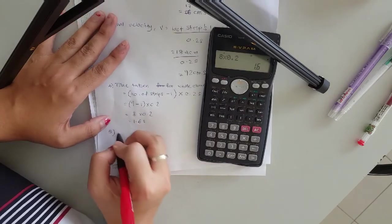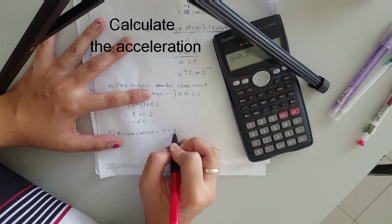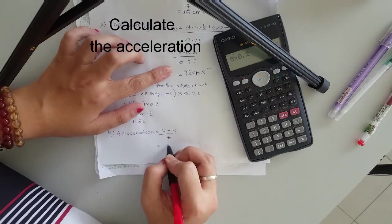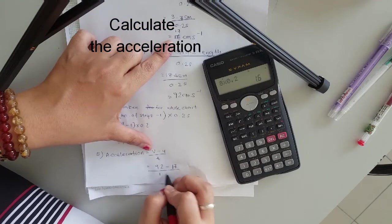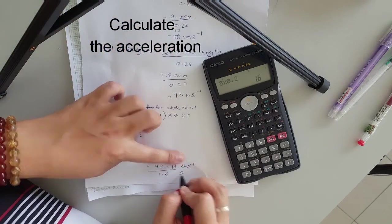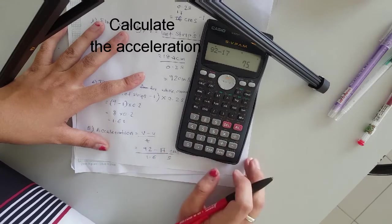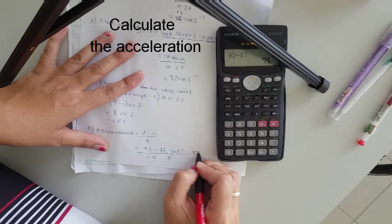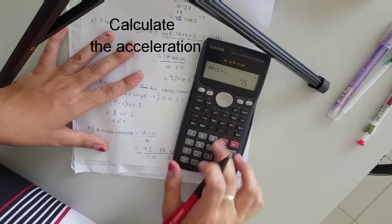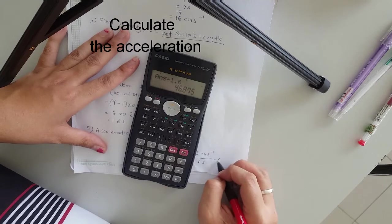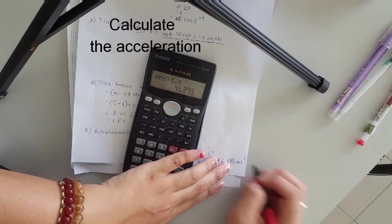So last but not least, number 5 is the acceleration. Formula V minus U over t. So V is 92. U is 17 divided by 1.6. Centimeter per second. Unit second. So my acceleration is 46.875 centimeter per second square. So this is my answer.